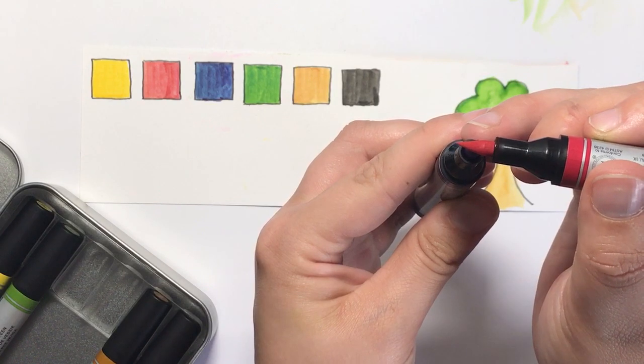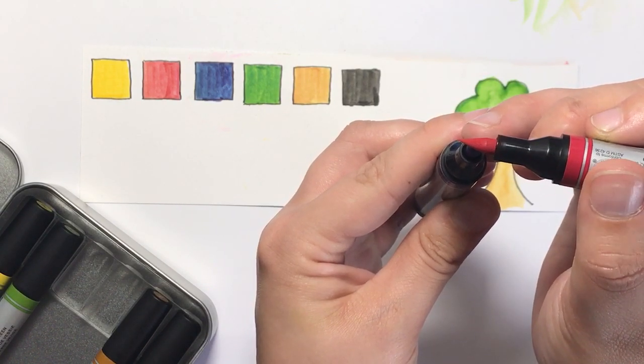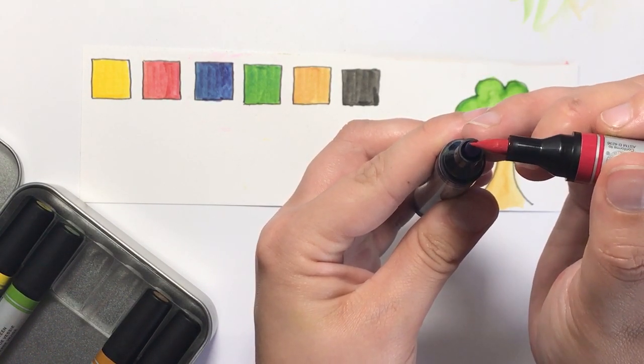Very similar to chameleon markers, but obviously you can use these in your colouring books. I can't really tell how much red we've got on there with it being such a dark colour, but we'll just give it a go and see what happens.